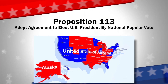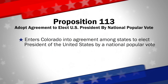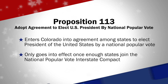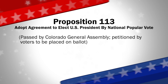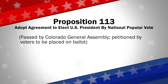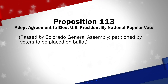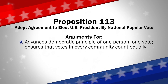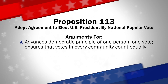Next up is Proposition 113, which enters Colorado into an agreement among states to elect the President of the United States by a national popular vote. The agreement only goes into effect for member states once enough states join the National Popular Vote Interstate Compact. The Colorado General Assembly passed legislation to join the Compact in the 2019 session. A petition effort gathered sufficient signatures to place this question on the 2020 ballot. Those in favor of Proposition 113 say a national popular vote for president advances the democratic principle of one person, one vote, and ensures that votes in every community count equally.